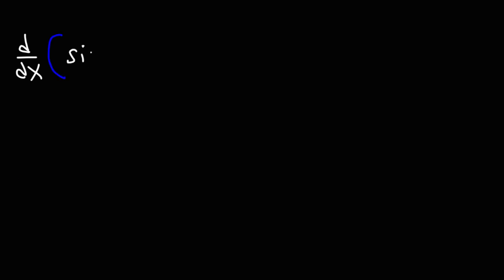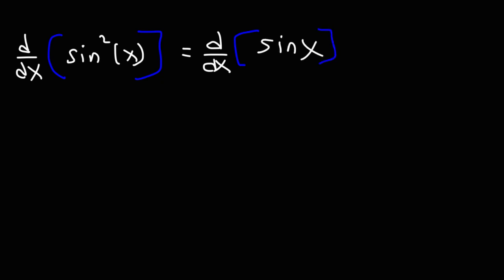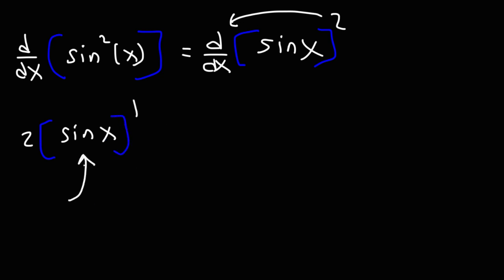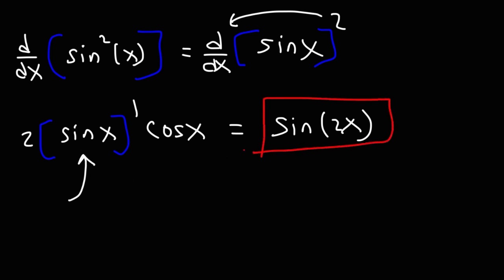One problem I wanted to give before that was the derivative of sine squared of x. Now that you know how to do the previous one, you can certainly do this one. Just like before, I would recommend moving the exponent to the outside — it makes the whole problem a lot easier. Move the 2 to the front, keep the inside part the same, subtract the exponent by 1, giving 2 sine to the first power, then take the derivative of the inside function, which is cosine. Now, 2 sine x cosine x is also equal to sine 2x — it's the double angle formula — so you can write your final answer either way.